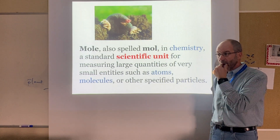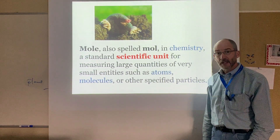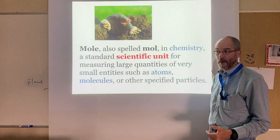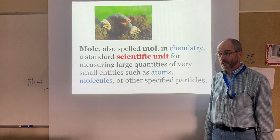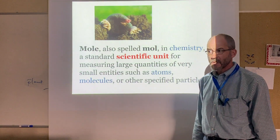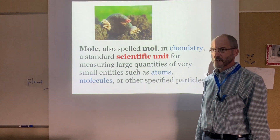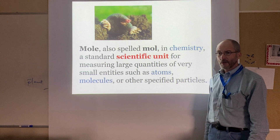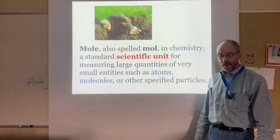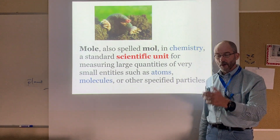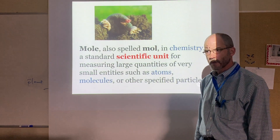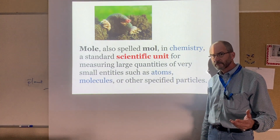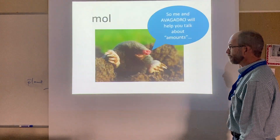If I wanted 72 eggs, wouldn't it just be easier to say six dozen? The number works out in multiples of 12, but six dozen is simpler to say. So once again, going back to our furry little buddy — me and Avogadro are going to help you talk about amounts.